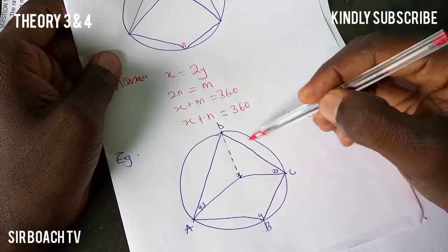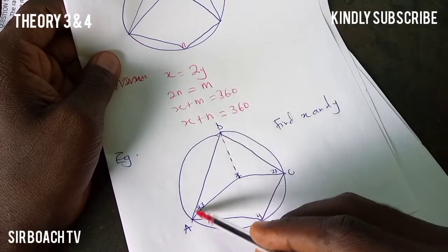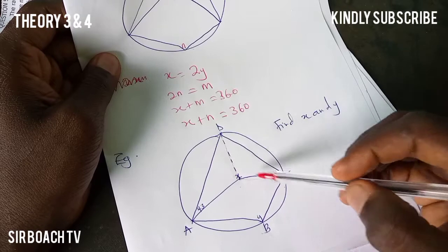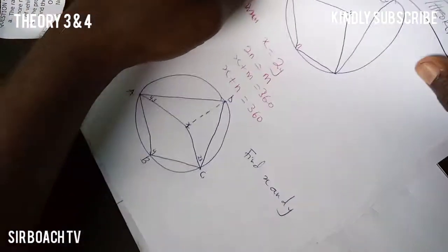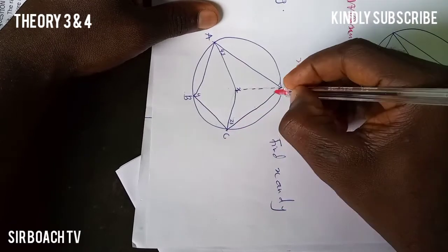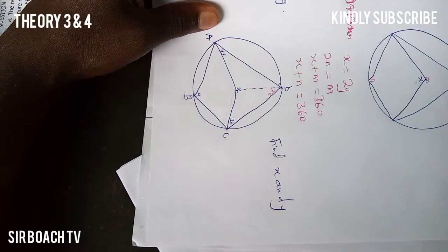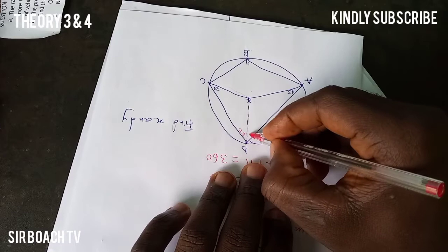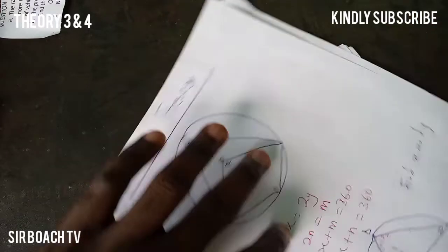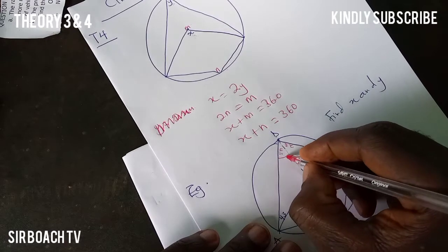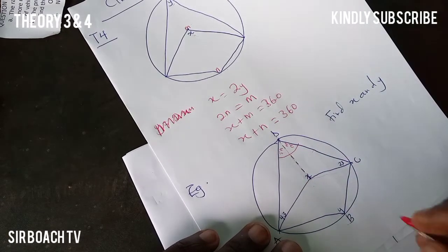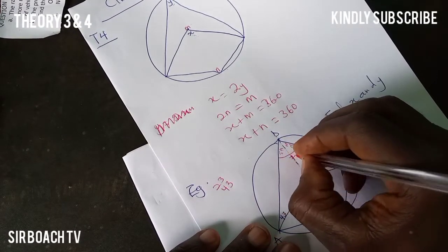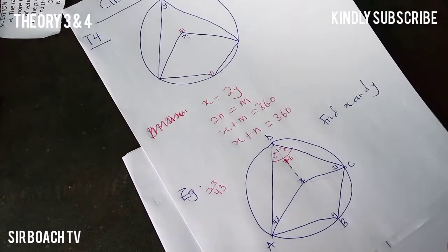This side forms a triangle and this side also forms a triangle — both are isosceles triangles because each uses two radii. Radius equals radius, so the base angles are equal. If this base angle is 23 degrees, then this side is also 23 degrees. Similarly, if this base angle is 43 degrees, then this side is also 43 degrees. So the total here is 23 plus 43, which gives us 76 degrees at the top.